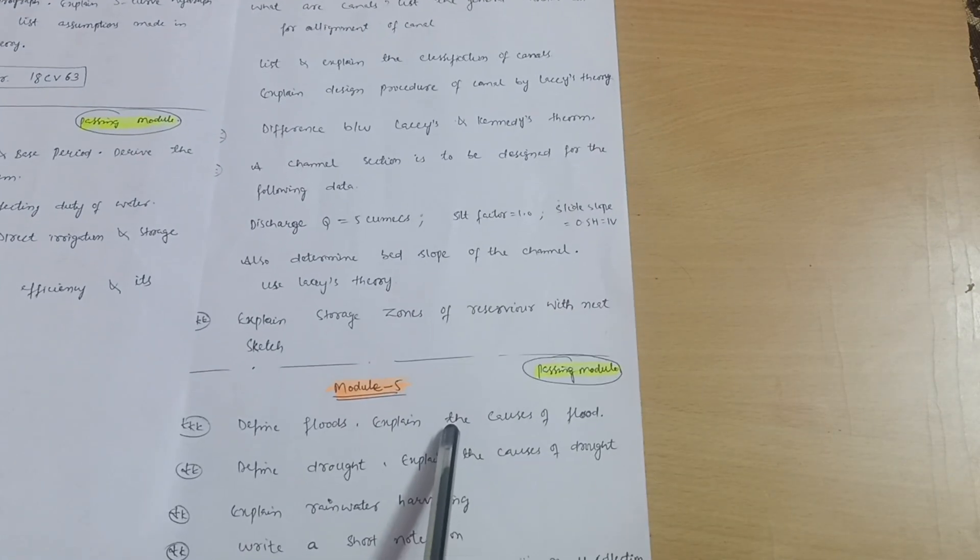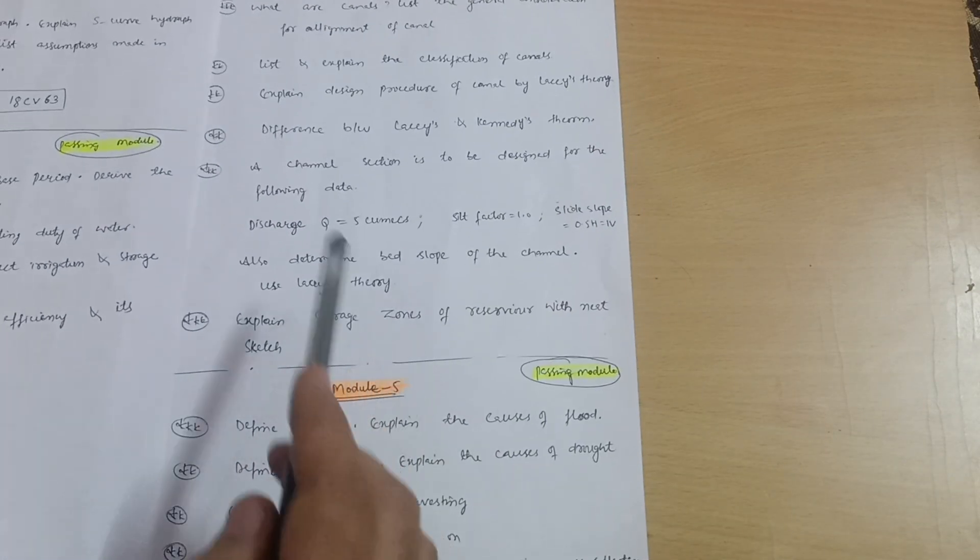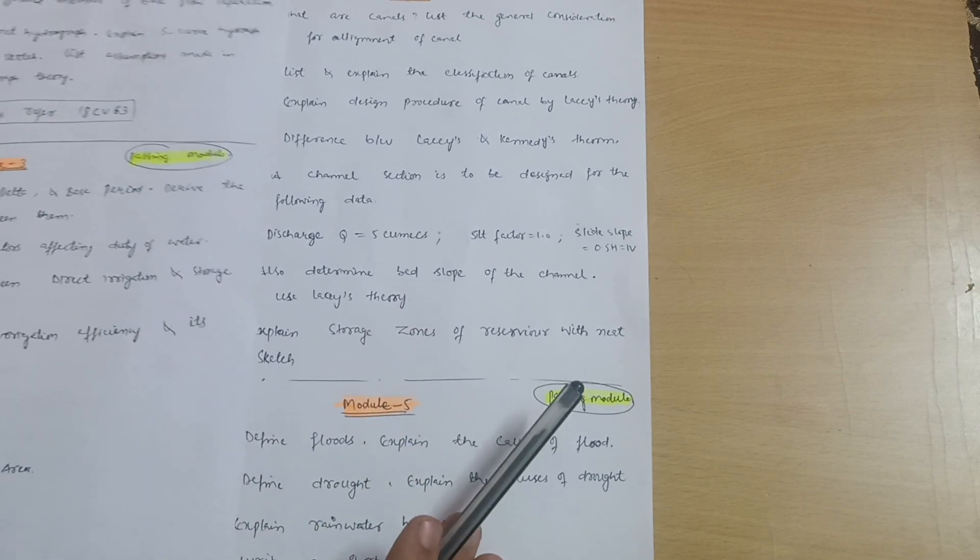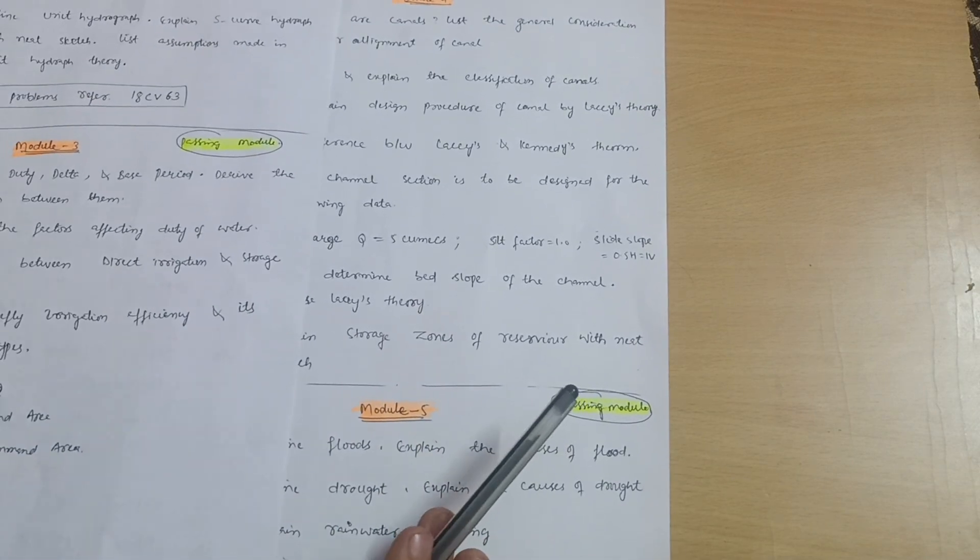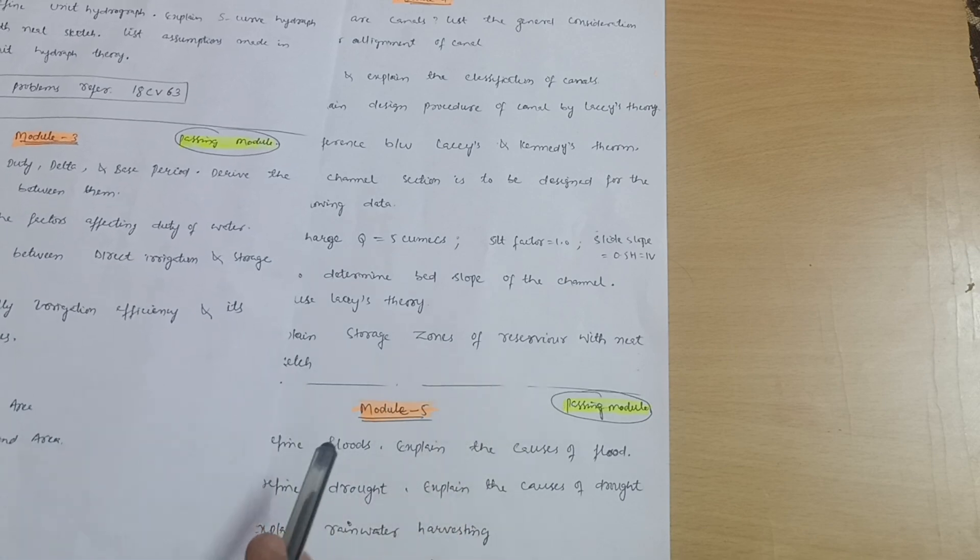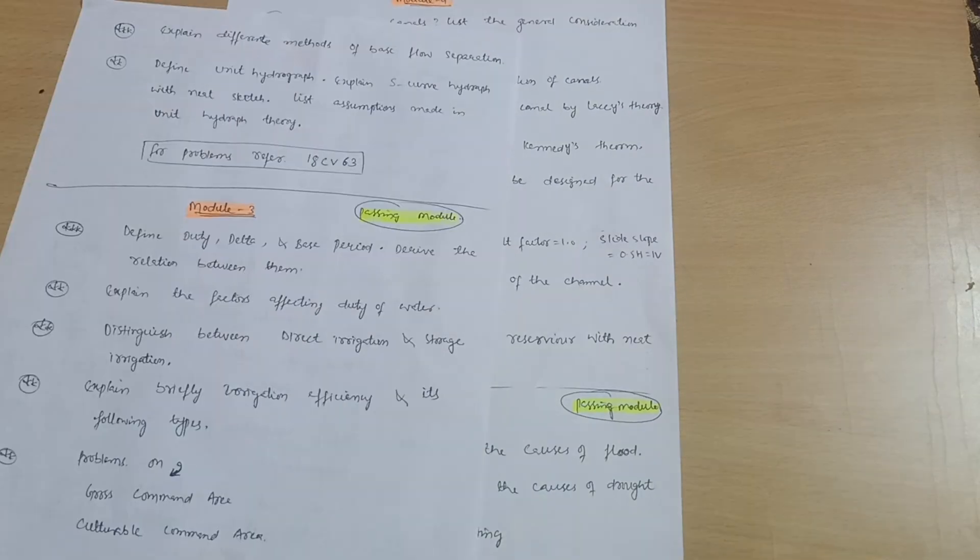Module 5 is again your passing module. These modules are comparatively easier than modules 4 and 2, and you can easily clear this subject. Not only pass, you can easily score in this particular subject with flying colors. I wish you all the best for your examinations, my dear friends.